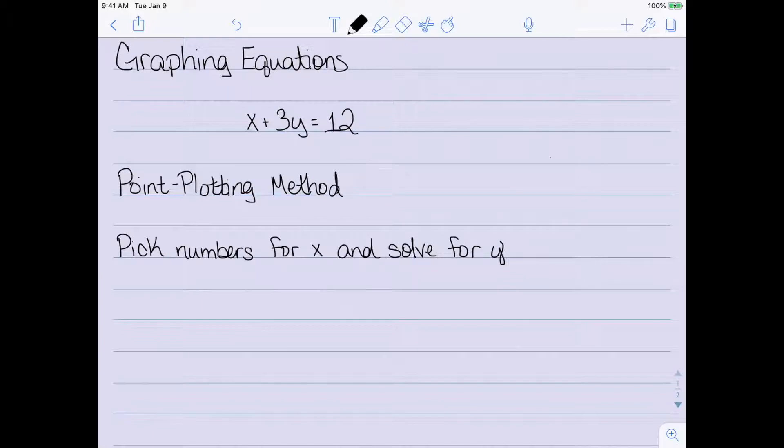And there are several different ways to graph things. We're going to concentrate on what's called the point-plotting method. And the point-plotting method is the most basic form of graphing an equation. The idea? We just want to pick some numbers for x and solve for y. So let's look at some examples.